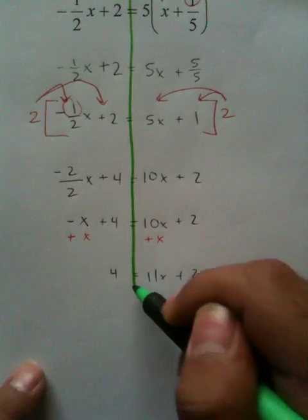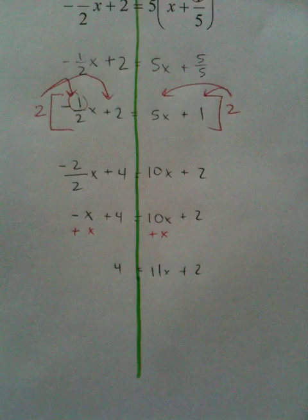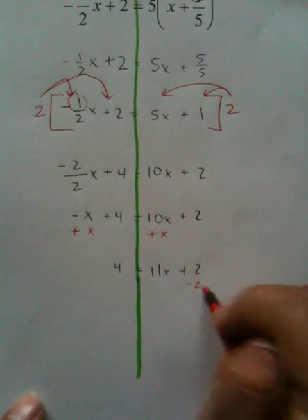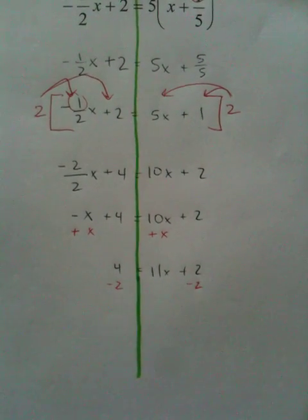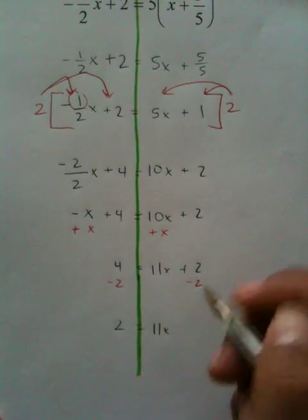From there, we're going to use the inverse of positive 2, which is negative 2. So we're going to subtract 2 from both sides of the equation. 2 equals 11x.